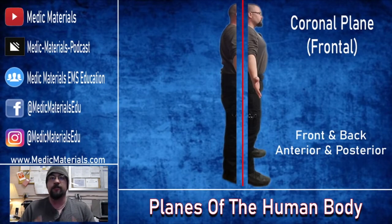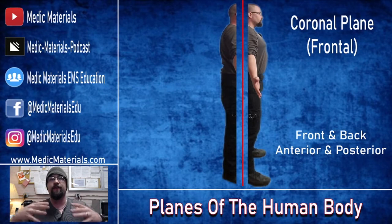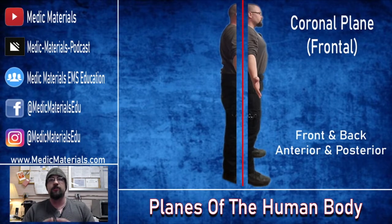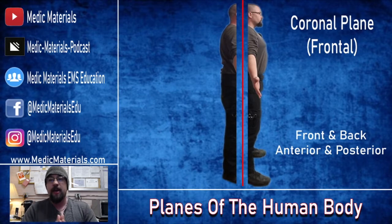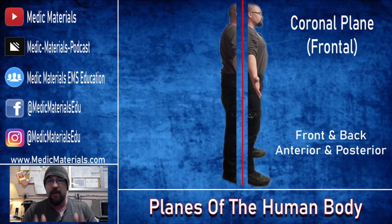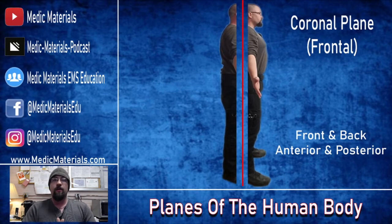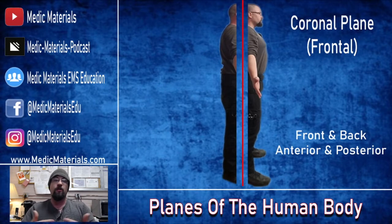So there's three main planes to the human body. The first plane is the frontal or the coronal plane. This divides your body — as you can see in this picture — into a front and a back portion. This does not have to be equal portions; it just is a dividing line between front and back, front and rear — anterior, which is front, or posterior, which is back.